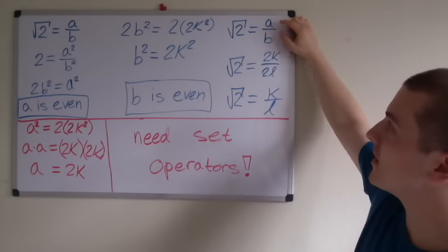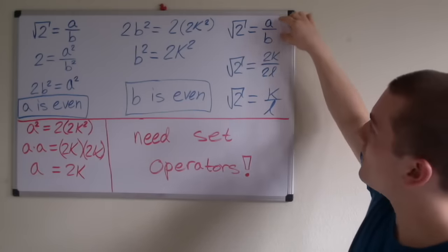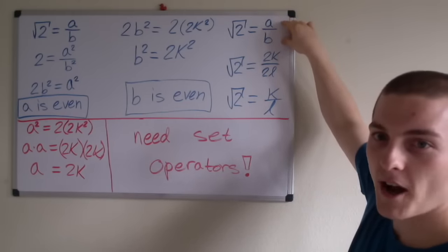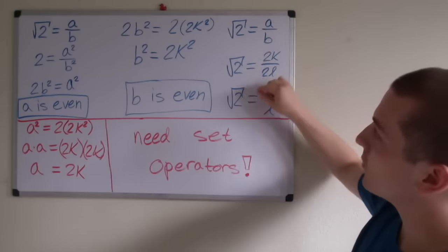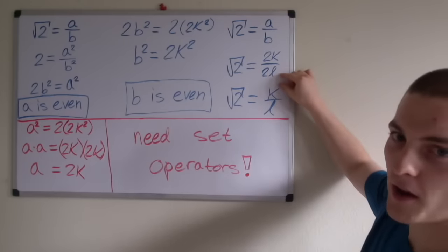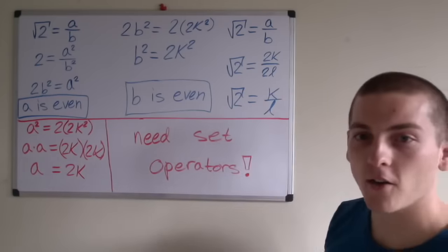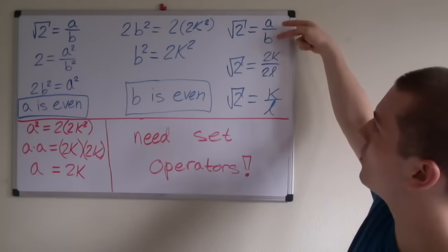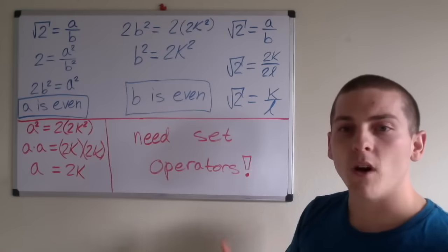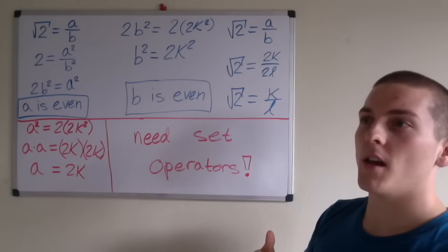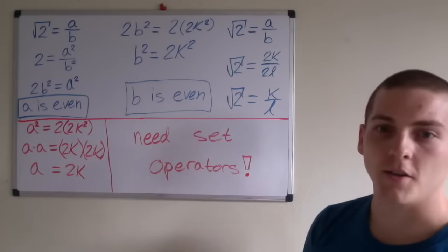Now if we go back to our original premise, the square root of 2 equals a divided by b, where a divided by b is an irreducible fraction. But since a is an even number and b is also an even number, we can express these numbers as 2k and 2l. But these 2s will reduce, meaning that we'll have the square root of 2 equals k divided by l. Since this reduced from a divided by b to k divided by l, we know that we do not have a rational number. There's a more specific way to classify these numbers, but we need set operators in the next video.